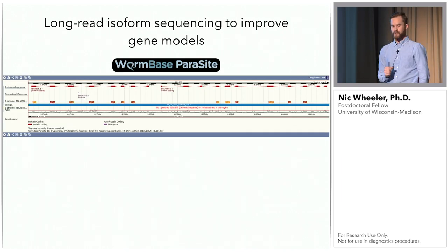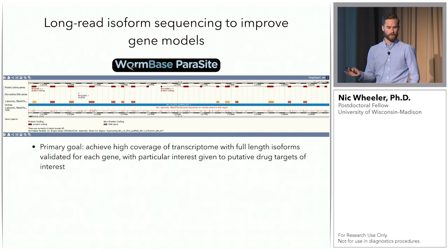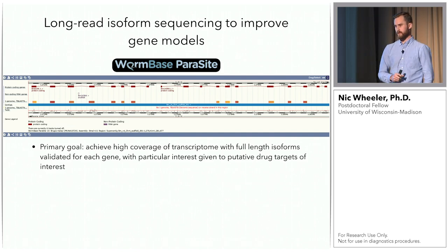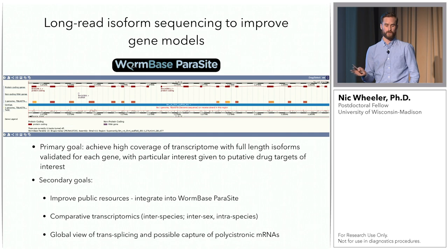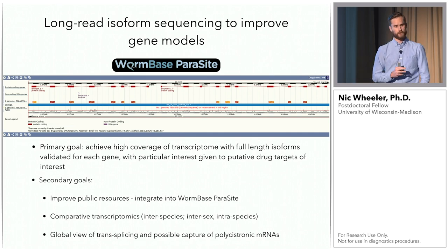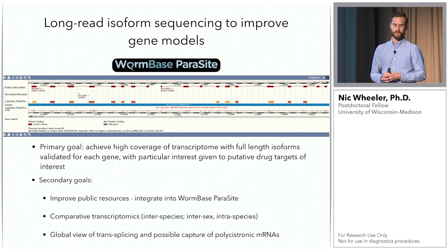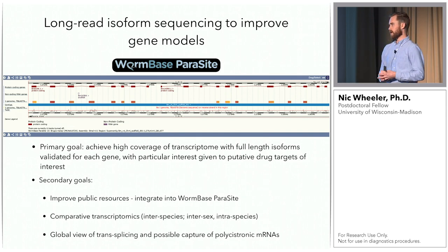Our goal is simple: we wanted to use IsoSeq to improve gene models. The primary goal was to achieve high coverage of the transcriptome with full-length isoforms validated for each gene, with particular interest given to the drug targets we study. Secondary goals included improving public resources like WormBase ParaSite, performing comparative transcriptomics between Brugia and heartworm and between males and females, and getting a global view of trans-splicing, since nematodes are one of few organisms that have trans-splicing and operons or polycistronic mRNAs.